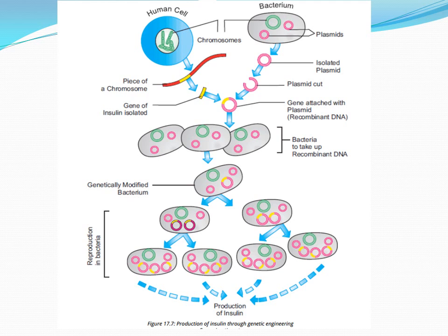The insulin gene is isolated or cut from the total DNA of the organism. This gene is cut with the help of an endonuclease enzyme, which is basically a molecular scissor that cuts a specific part of the gene of interest. In this example, the molecular scissor — the endonuclease — cuts the yellow part of the gene, which is the insulin gene.